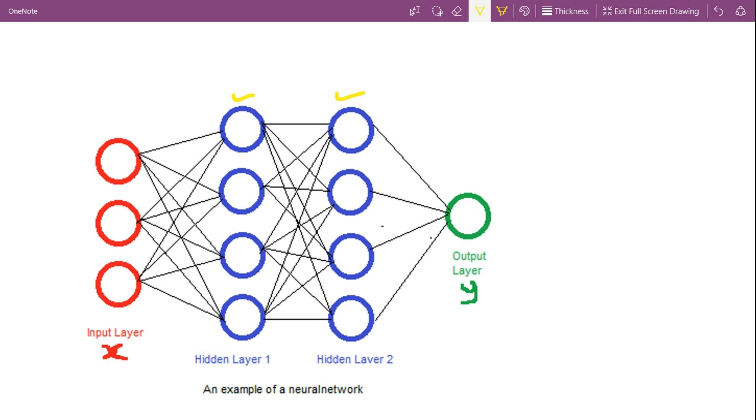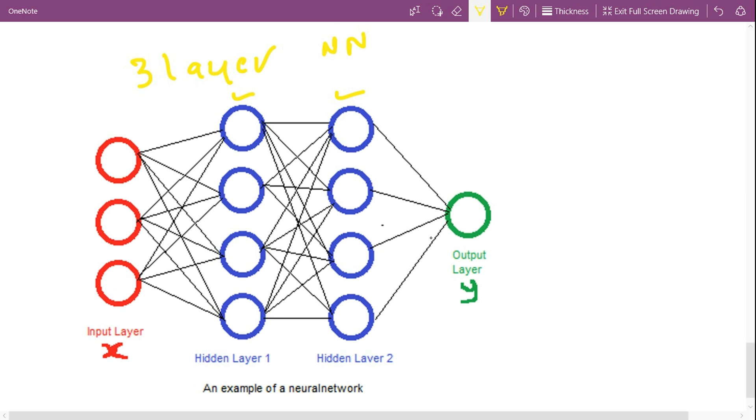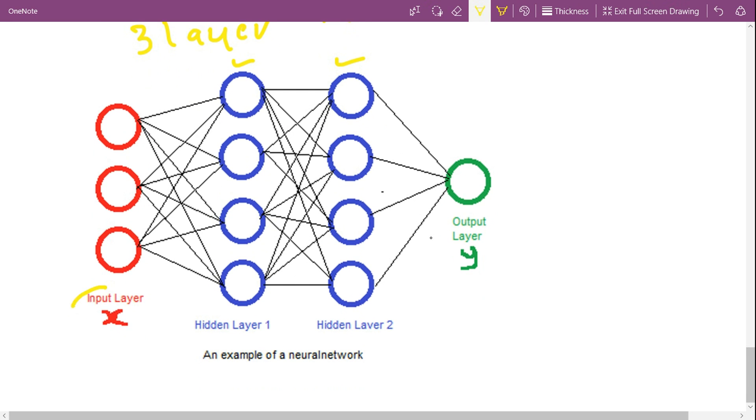So here is an example of a three-layer neural network. The input layer is usually not considered for counting the total number of layers. It's because the input layer is having only the inputs. These are not neurons, they are just inputs.